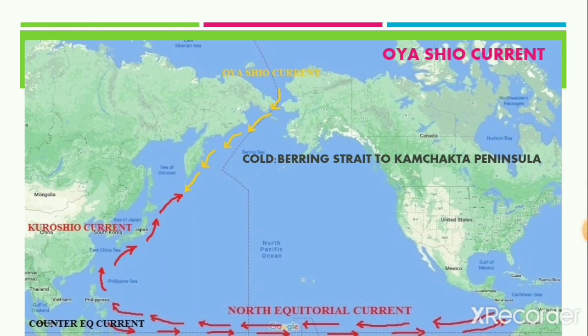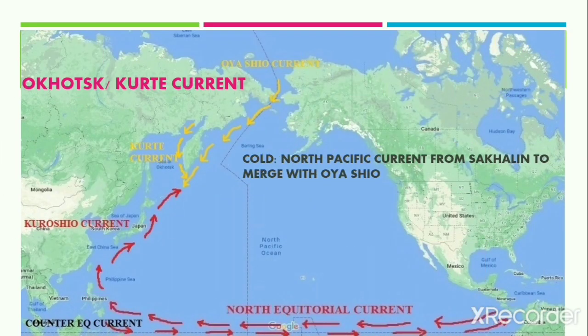Meanwhile, there is a cold current that comes from the Polar Region. These currents start from the Bering Strait and flow southward to reach the Kamchatka Peninsula. This current is termed the Oyashio Current. There is one more cold current that comes from the North Pacific Ocean; it flows through the cyclonic region to merge with the Oyashio Current near the Hokkaido coast. Both these cold currents meet with the warm Kuroshio Current to the north of the Japanese coast, and due to this, the region experiences a lot of mist and fog since the warm and cold water gets mixed.